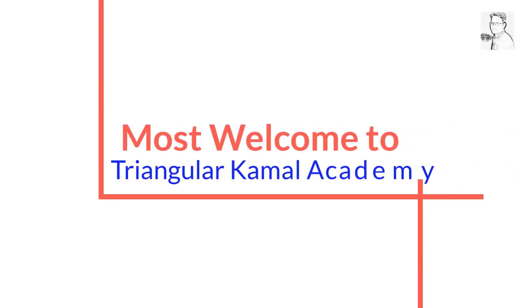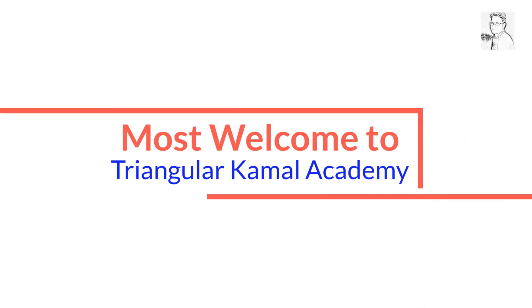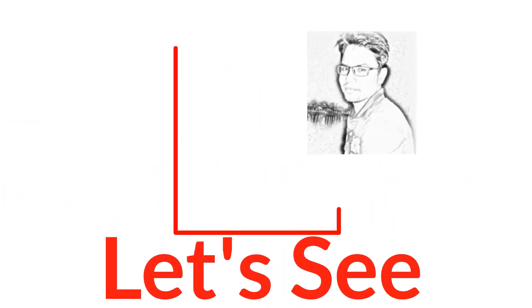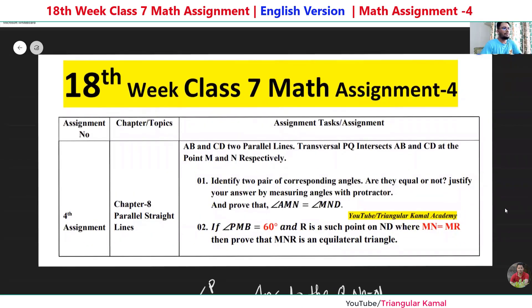Assalamualaikum wa rahmatullah. This is Mohammad Kamal Hussein, content creator at Triangular Kamal Academy. Today I am going to solve the Week 18 math assignment for the students of Standard 7. This assignment is for students of the English version and is from Chapter 8: Parallel Straight Lines. There are two different questions; inshallah we will try to answer all questions properly.